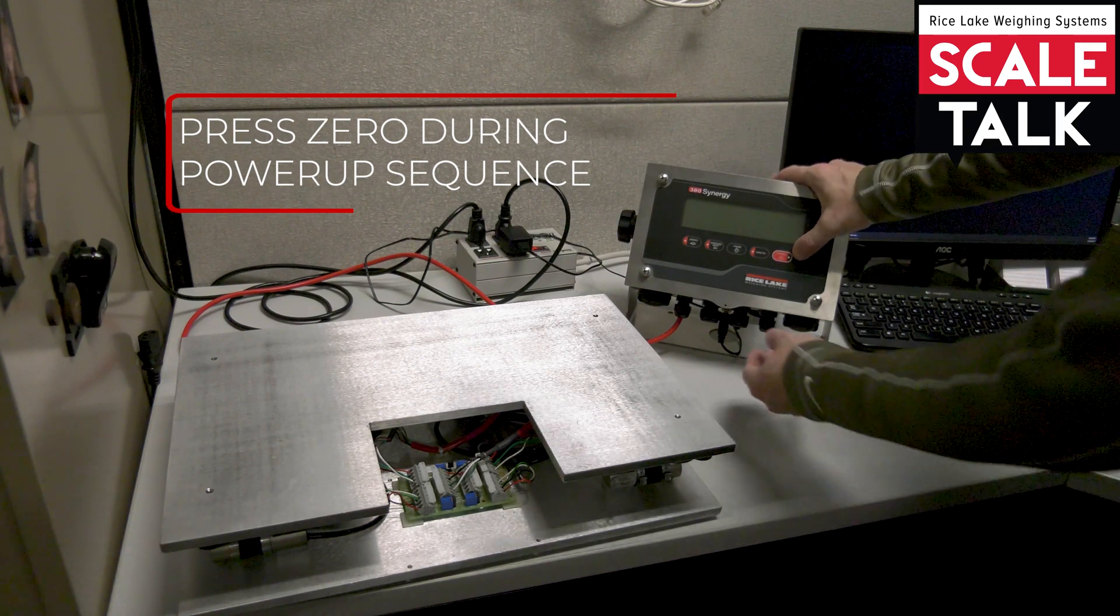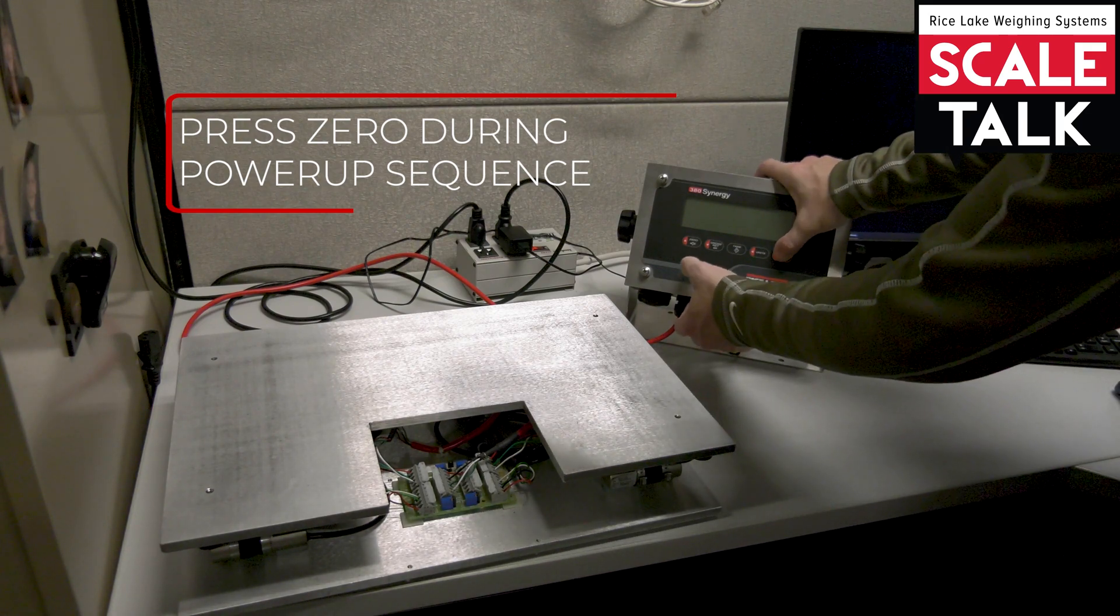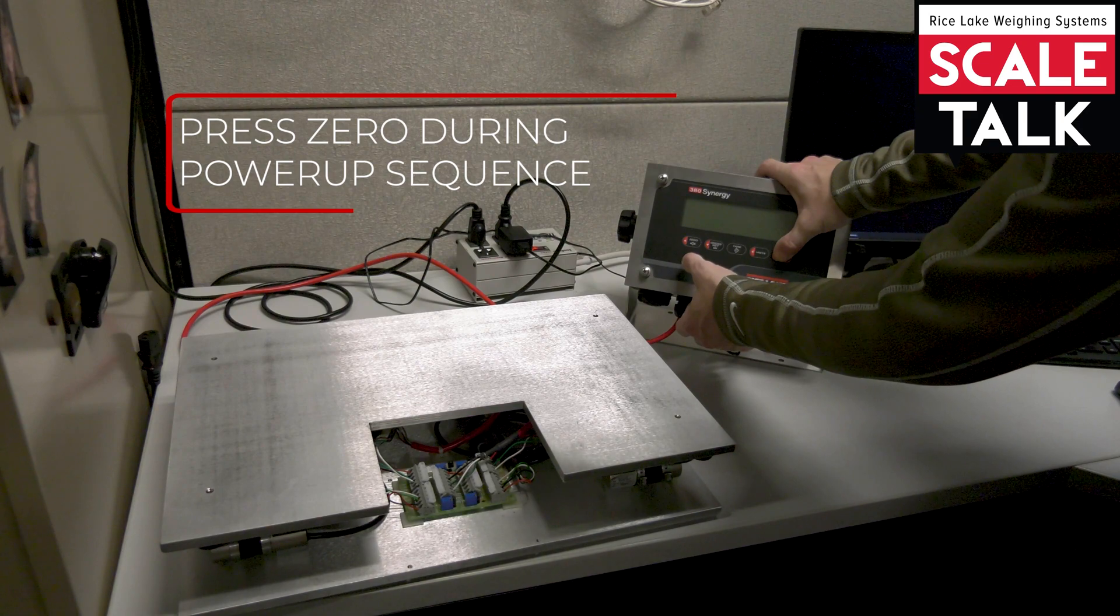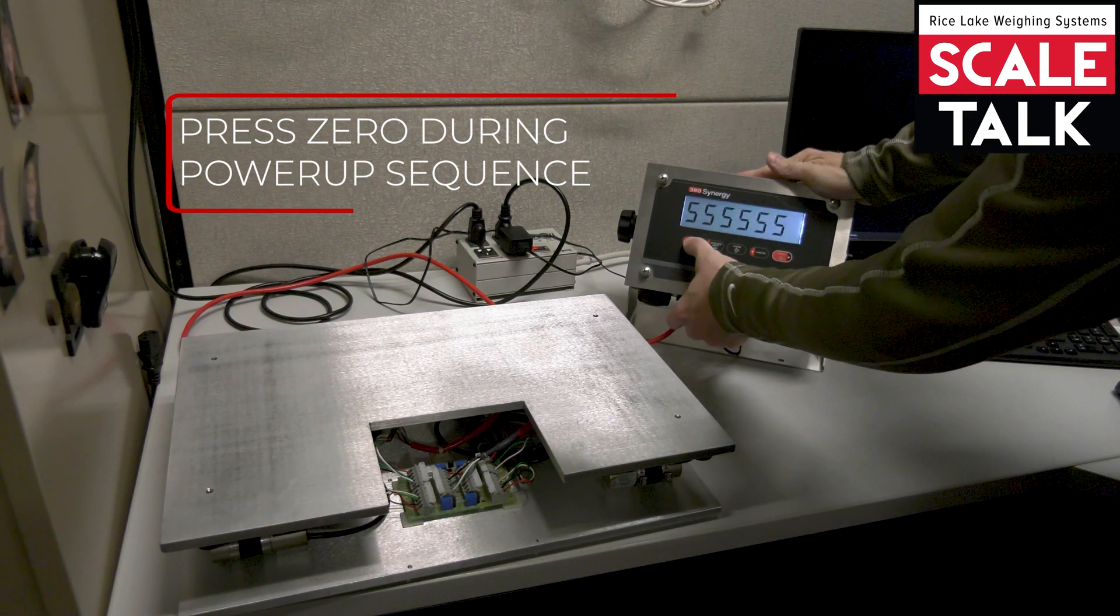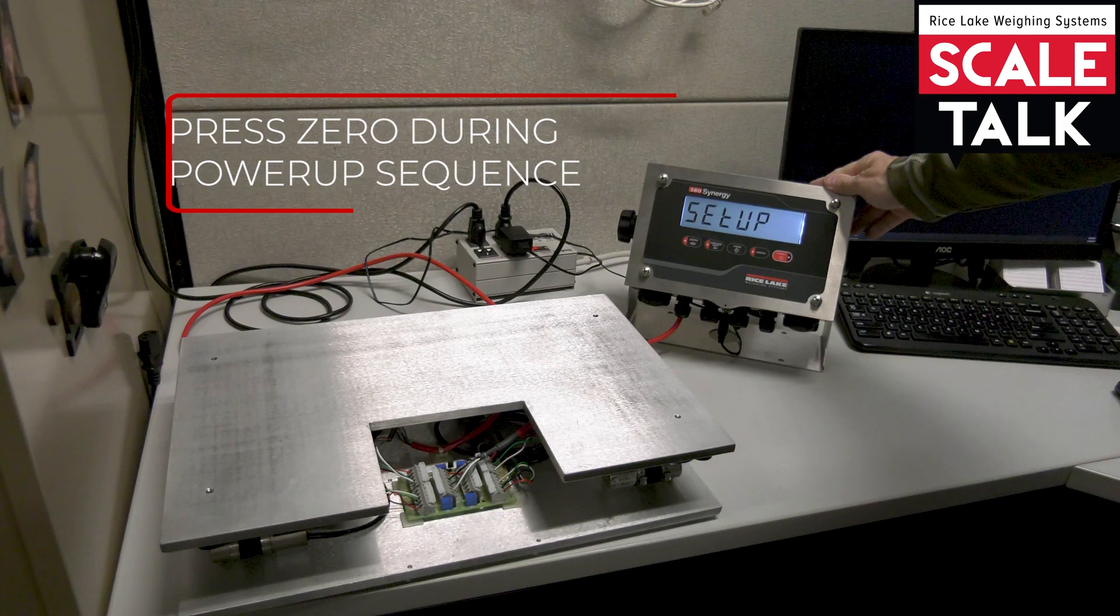So I'm going to press and hold that print button until the scale lights up. During the count up I'm going to press zero and now I'm into the setup menu.